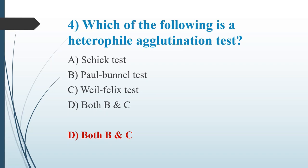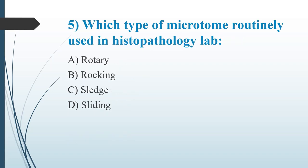Fifth question: Which type of microtome is routinely used in histopathology lab? Option A: Rotary. Option B: Rocking. Option C: Sledge. Option D: Sliding. The answer is Option A, rotary type. In the rotary microtome, the knife is typically fixed in a horizontal position. The sledge microtome is used for cutting large blocks and hard tissues. In the sliding microtome, the object to be cut is fixed and the knife moves across it. The microtome was invented by William His, and the freezing microtome is the cryostat.